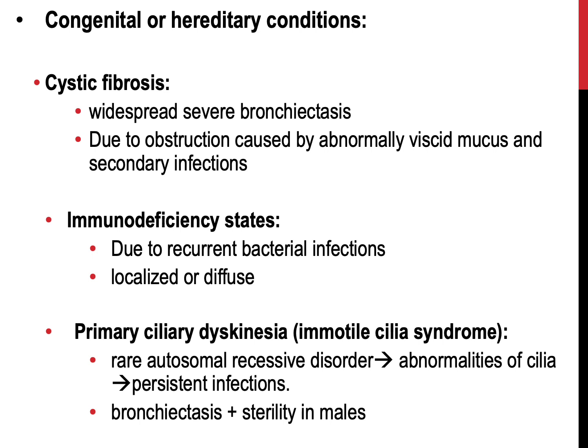Congenital or hereditary conditions include cystic fibrosis, in which there will be widespread severe bronchiectasis. This results from obstruction caused by abnormally viscous mucus and secondary infections. Cystic fibrosis is a hereditary disease that affects the lungs and the digestive system. The body produces thick and sticky mucus that may block the lungs and obstruct the pancreas.